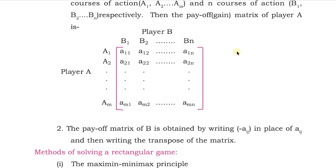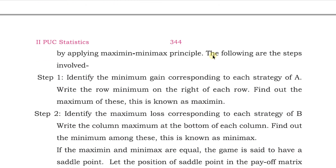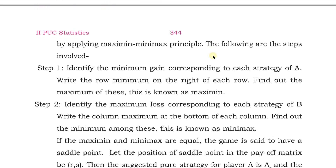The rows are a11, a12, up to a1n, then a21, a22, up to a2n, and so on. From each row we identify the minimum value and write it on the right. Out of all those minimum values, we select the one which is maximum — that is your maximin.